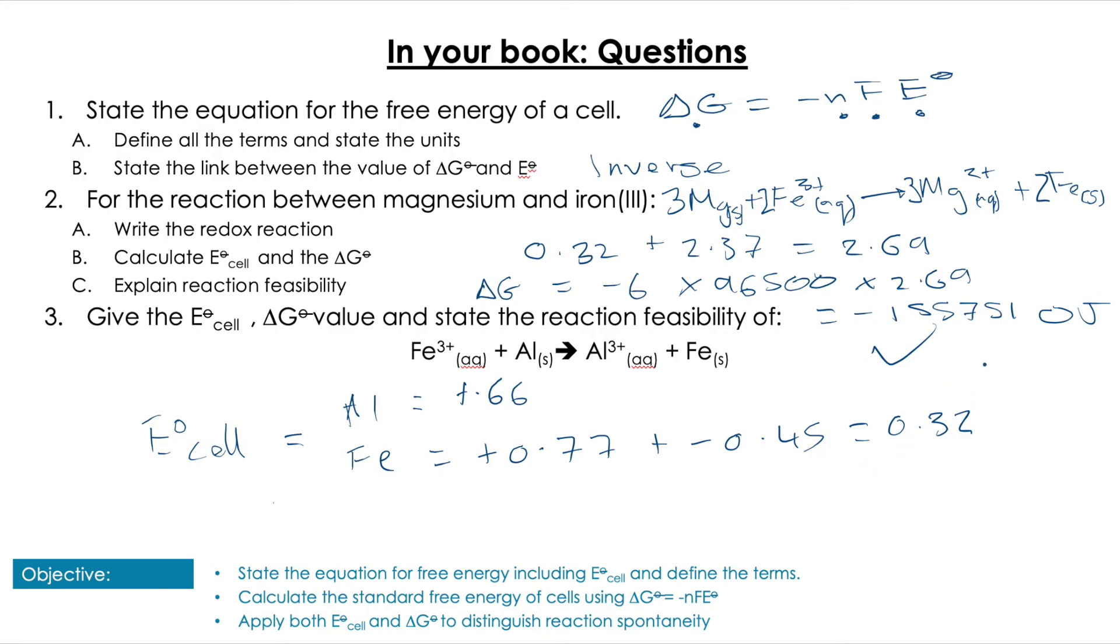Then we combine that to give us our 0.98 volt E°cell value. Then we can just use that value to plug into the equation. We've got three moles of electrons being transferred, and therefore we get a total, using Faraday's constant, of -283,710 joules. Remember it wants you to comment on the reaction feasibility, and you know that a negative value for ΔG° is going to be a spontaneous reaction.